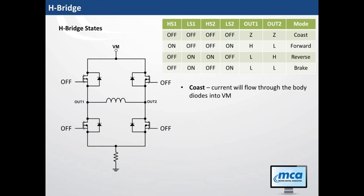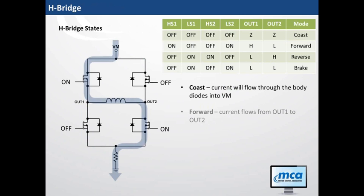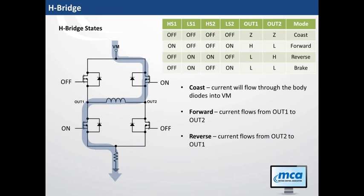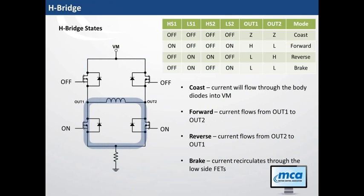These are the states in a brushed motor driver, shown in a truth table in our data sheets. The four states of the H-bridge are: coast, where all FETs are in a high-Z condition and current flows through body diodes; forward, where current flows from out-one to out-two; reverse, where current flows from out-two to out-one; and brake, where current recirculates through the low-side FETs.